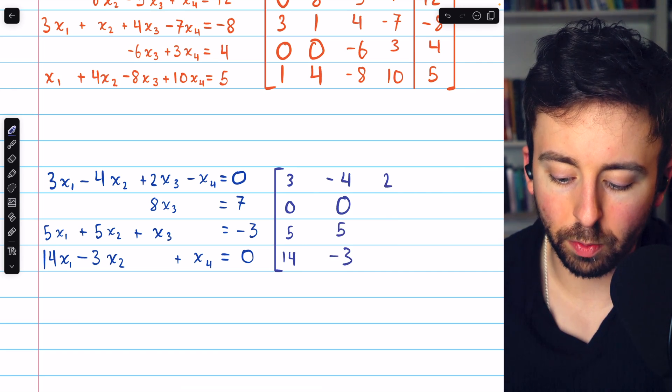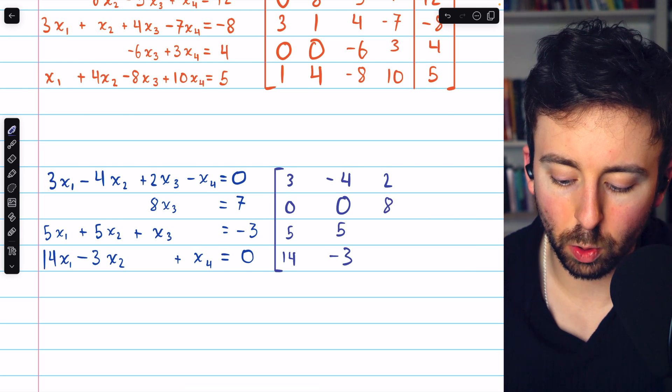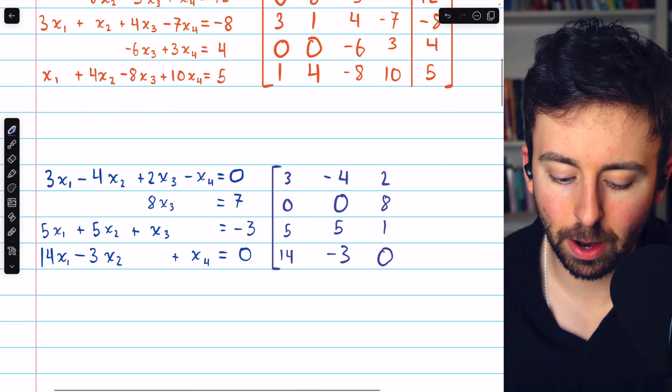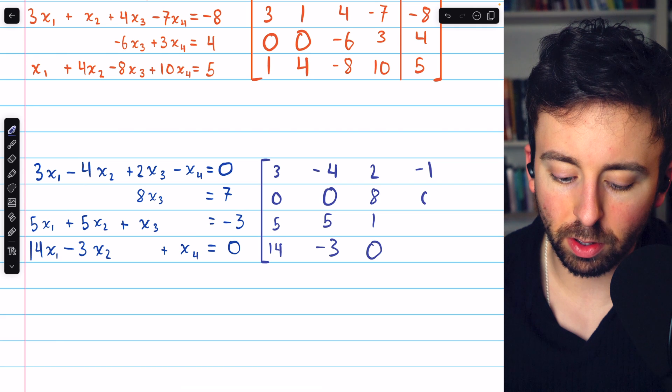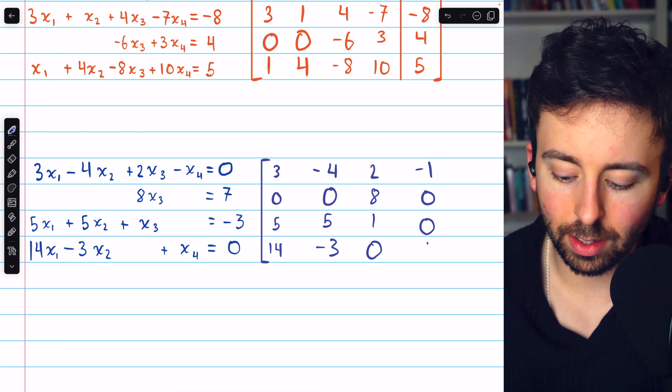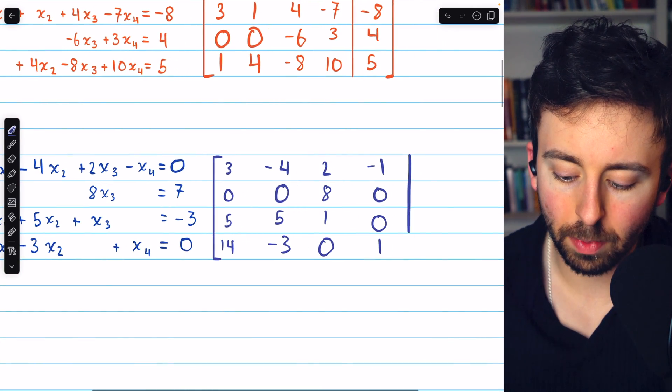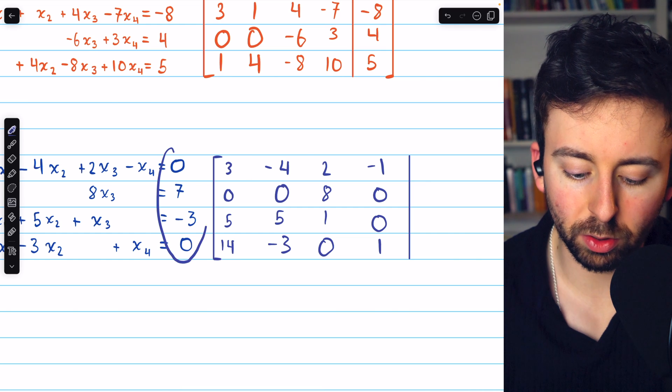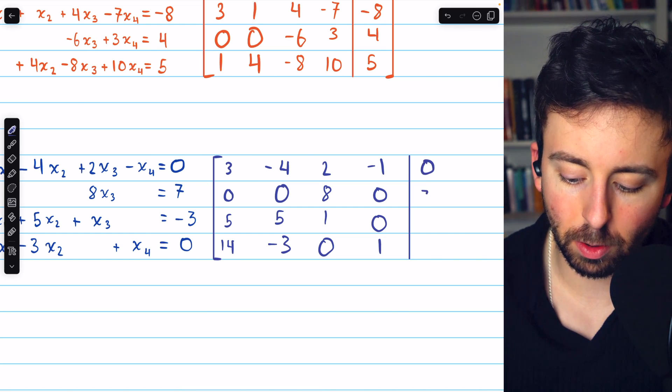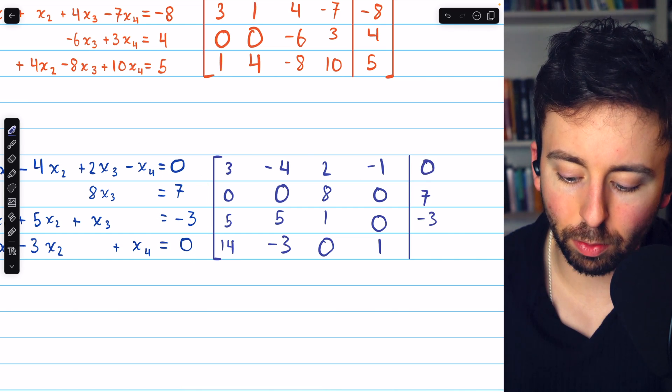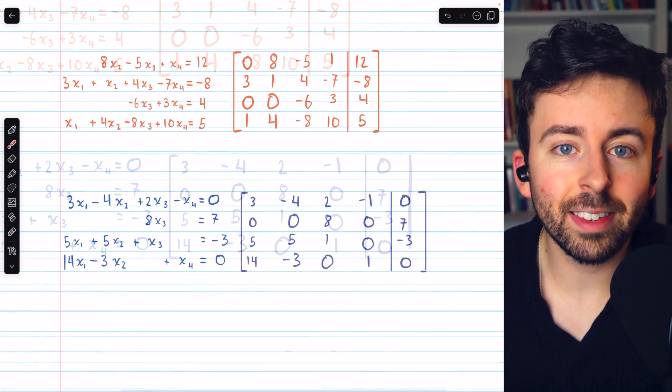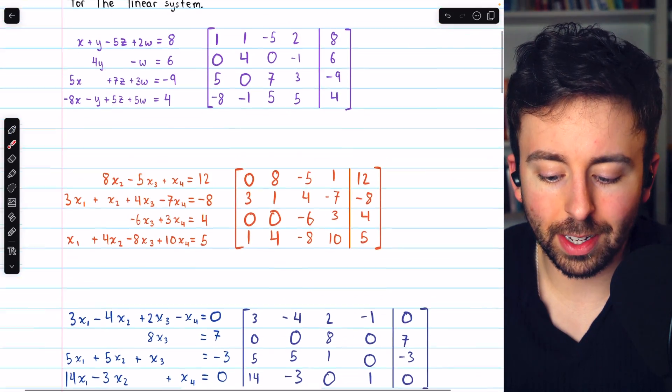In the third column, we have the coefficients of x3, which are 2, 8, 1, and 0. And then finally, the coefficients of x4, negative 1, 0, 0, and 1. Finally, the last column will store the constants, which are 0, 7, negative 3, and 0. And that's how to write an augmented matrix to represent a linear system.